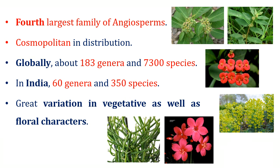Euphorbiaceae is the fourth largest family of angiosperms. The members of Euphorbiaceae are cosmopolitan in distribution, meaning they are present in every kind of habitat. Globally, about 183 genera and 7300 species are reported. In India, family Euphorbiaceae is represented by 60 genera and 350 species. There is a lot of variation in vegetative as well as floral characters, as shown in the images.